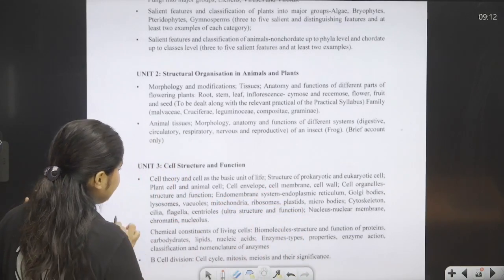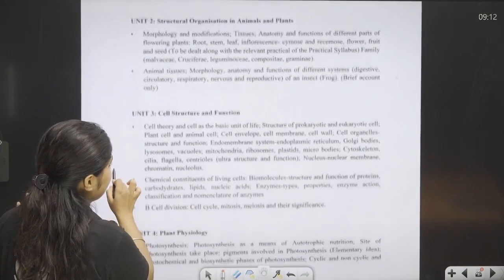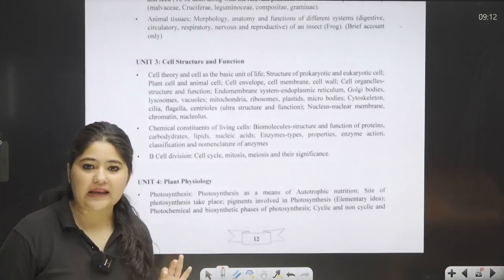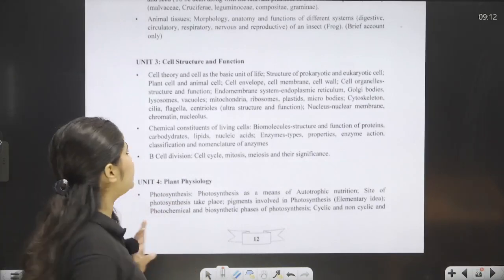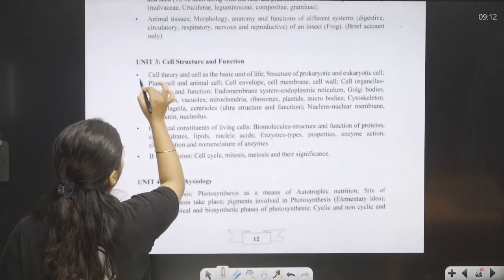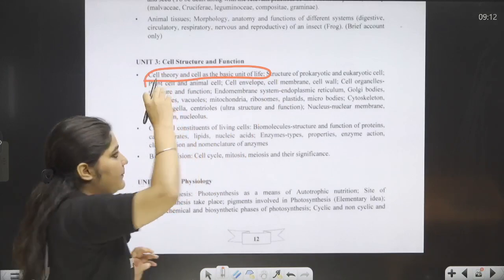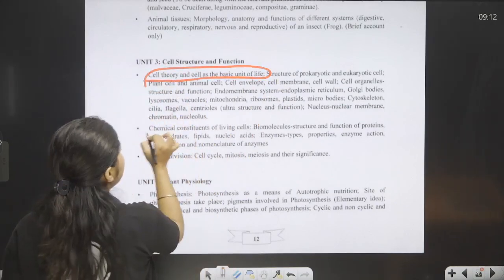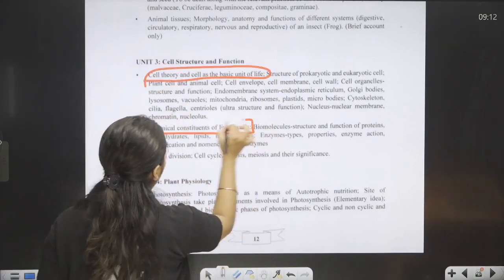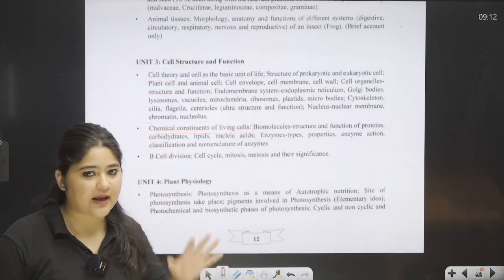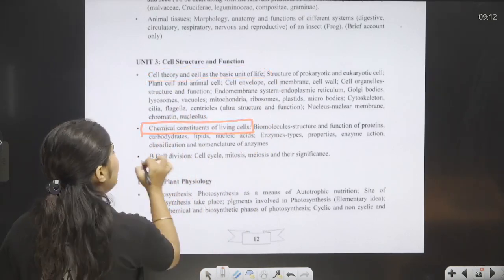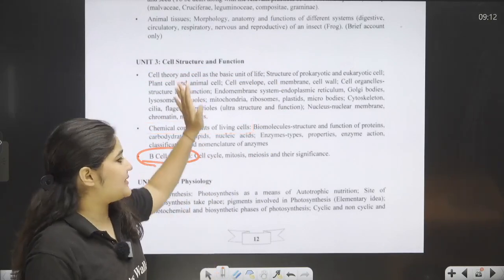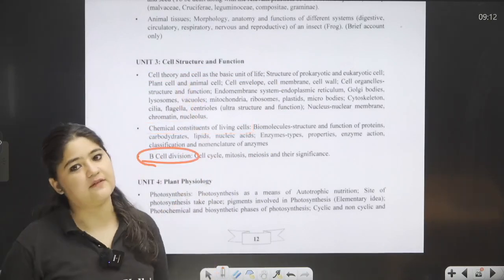Moving to the next unit — Cell Structure and Function — it is coming completely as-is. There are no major variations in that unit. The full cell will come: Cell Theory, Plant Cell, Animal Cell, complete cell organelles. Next, the Biomolecules chapter will come completely, and Cell Division will also come completely. This unit is exactly as it was before — no changes.